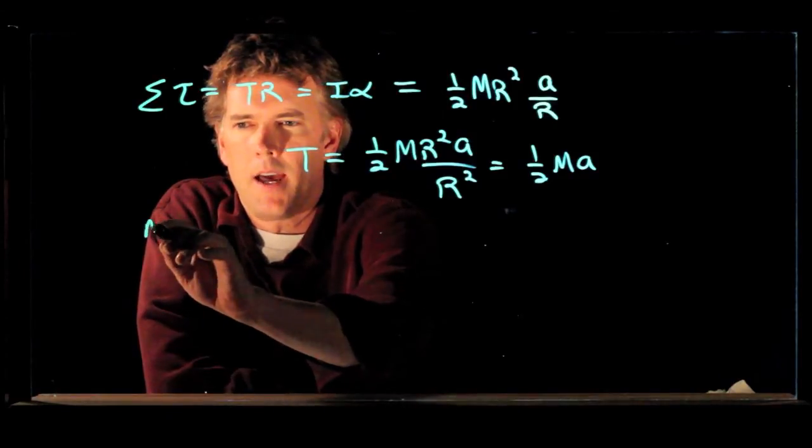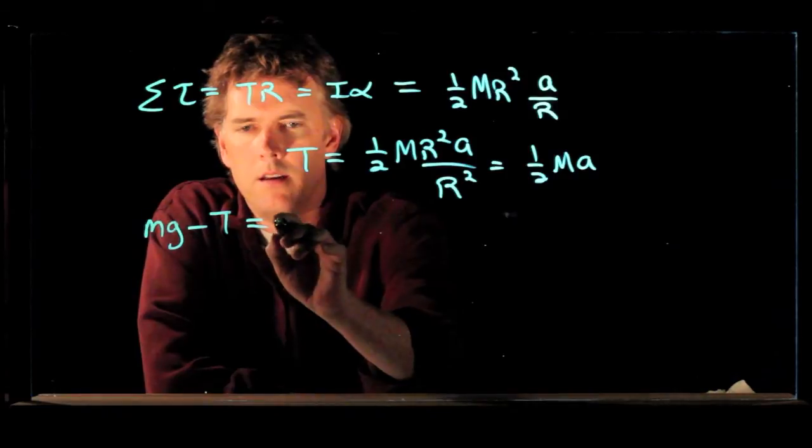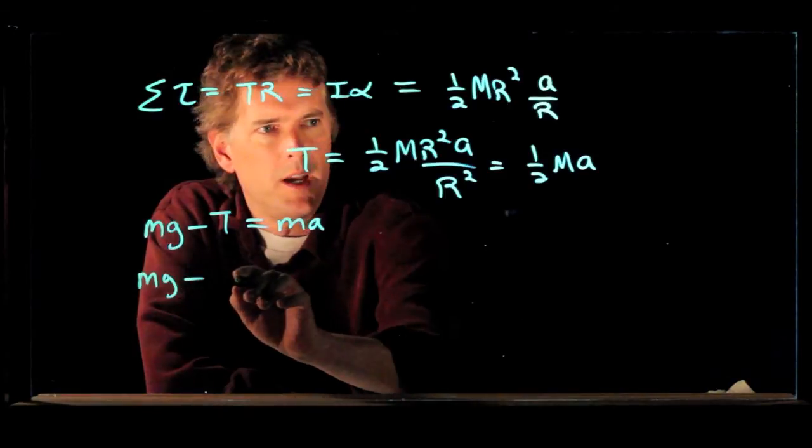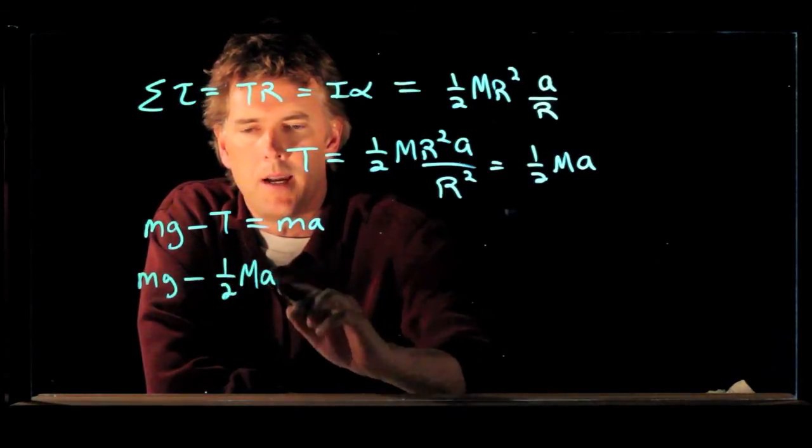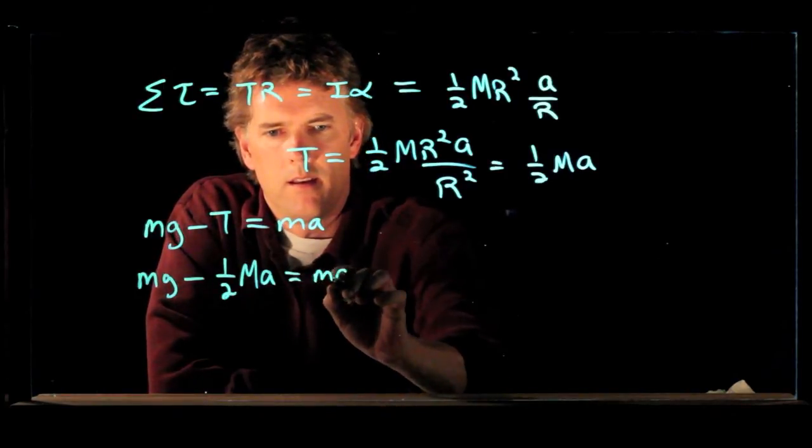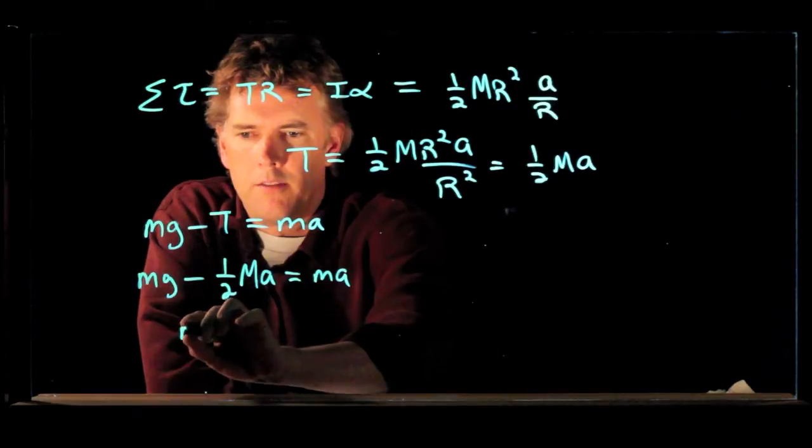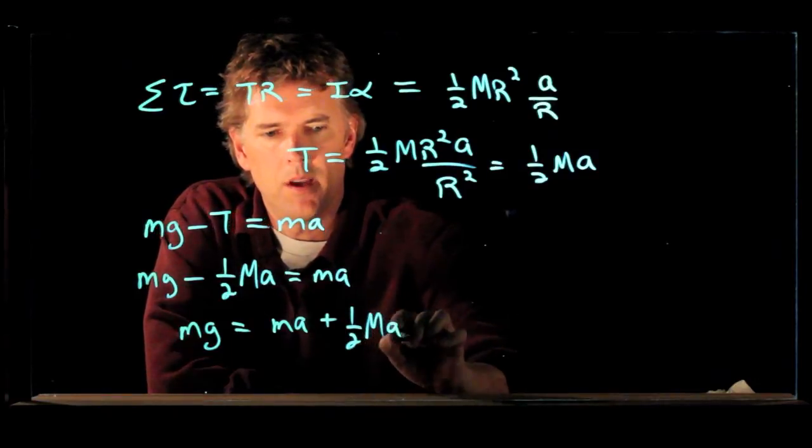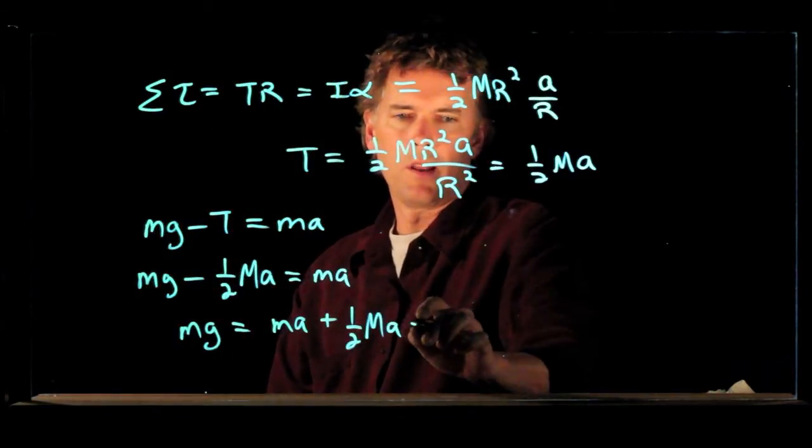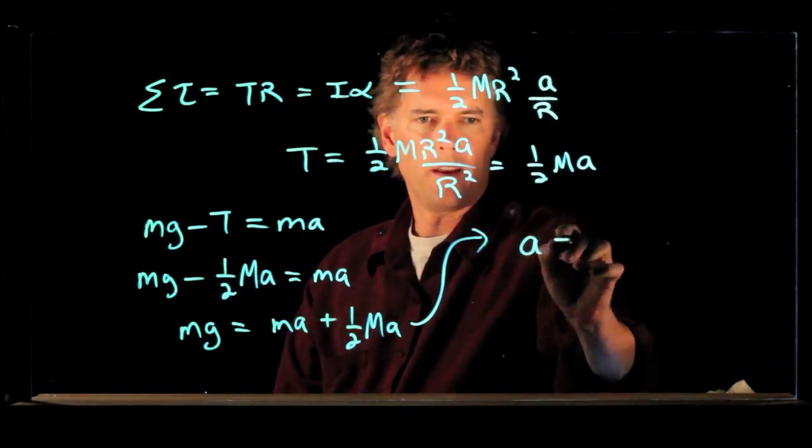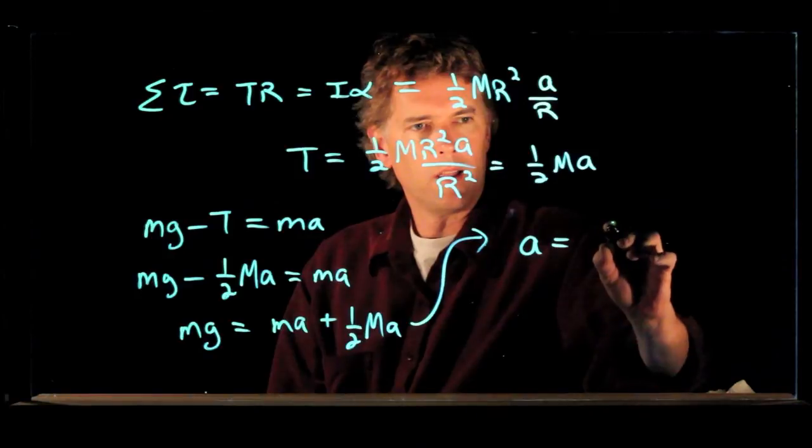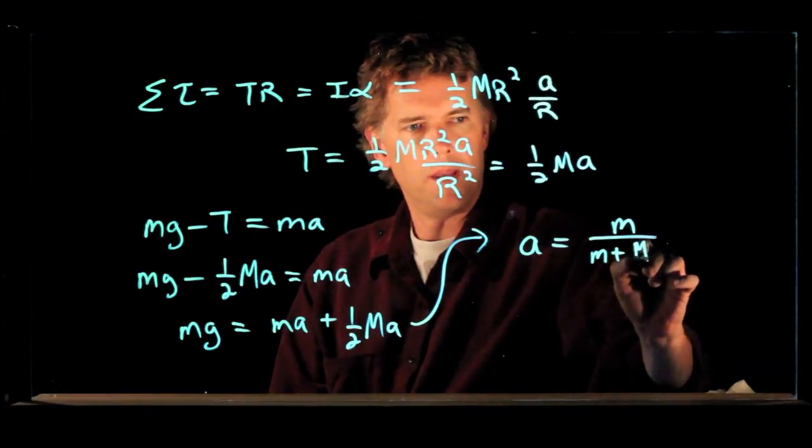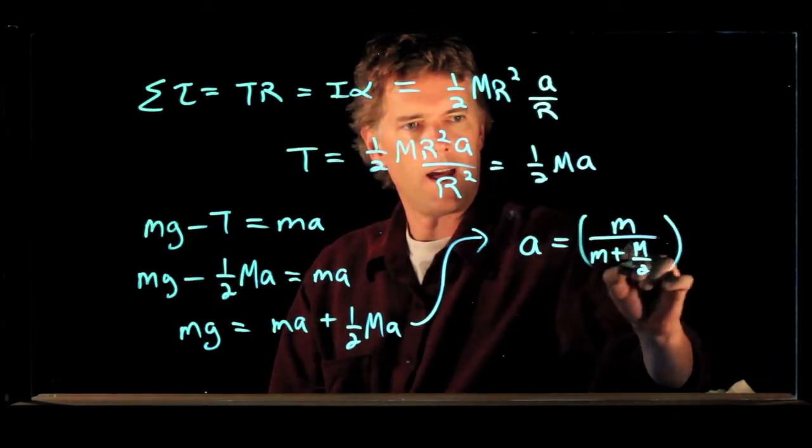Let's go to our other equation. We had Mg minus T is equal to M A. And now we can plug in for T. We have T is equal to one half big M times A. We can move it over to the other side. And so we have Mg equals little m times A plus one half big M times A. And now we can lump terms together and we can solve for A. A is equal to little m over little m plus big M over 2, all of that times G.